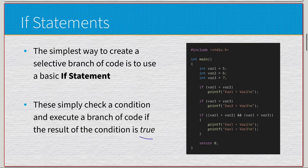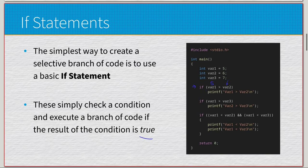Over here we have some code: int var1 = 5, var2 = 6, var3 = 7. The first if statement checks if var1 (which is 5) is greater than var2 (which is 6). In the parentheses we have the condition; the body is a single line so no braces are needed — it would print 'var1 is greater than var2'. Since 5 is not greater than 6, this is false and we won't run that code.